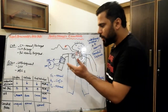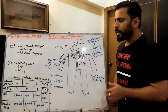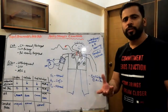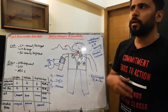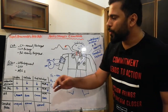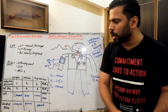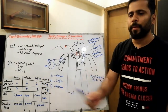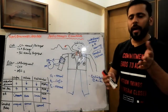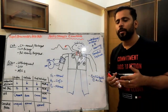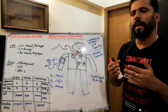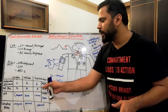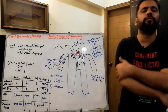To differentiate supravalvular, valvular, or subvalvular stenosis, perform the Valsalva maneuver. If the murmur decreases on Valsalva, it could be supravalvular, valvular, or subvalvular — but not HCM, because HCM murmur increases on Valsalva. This is because when flow across the LVOT increases, HCM murmur decreases; when flow across the LVOT decreases, HCM murmur increases while valvular, supra-, or subvalvular murmurs decrease.